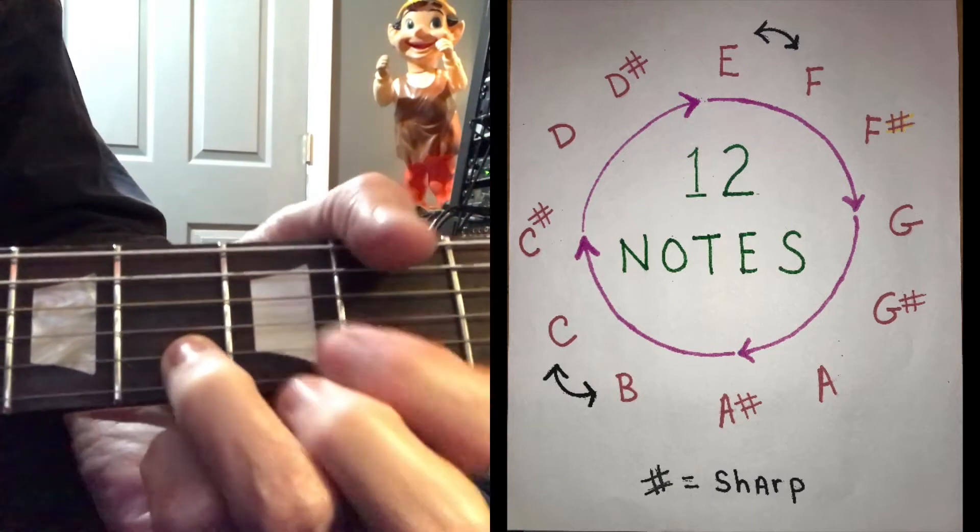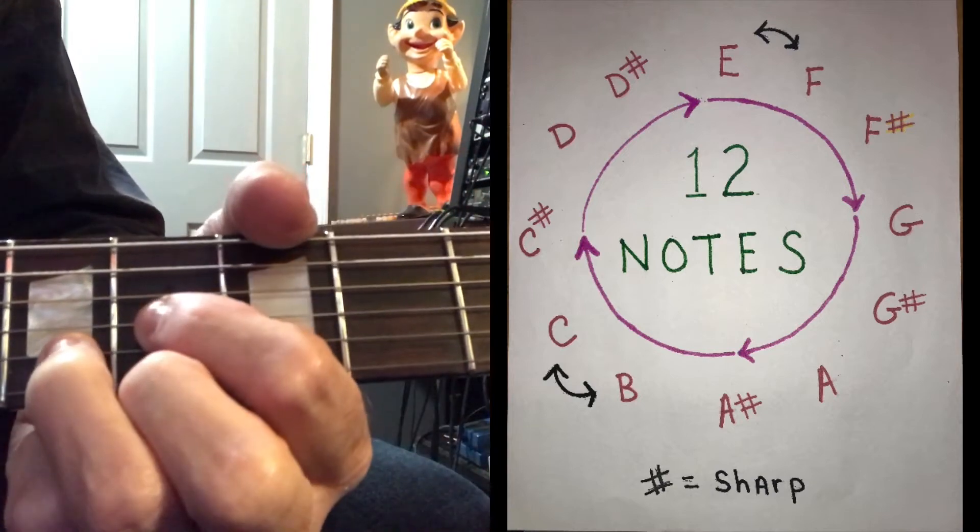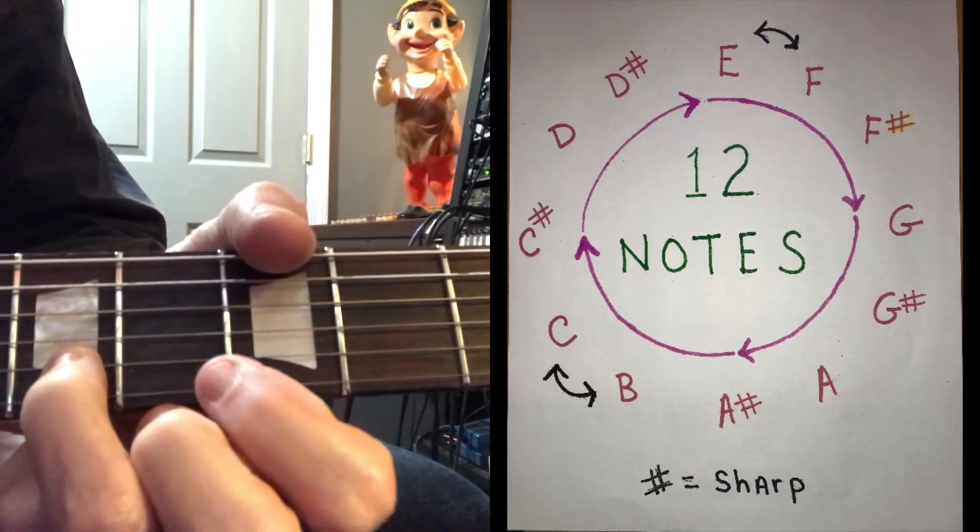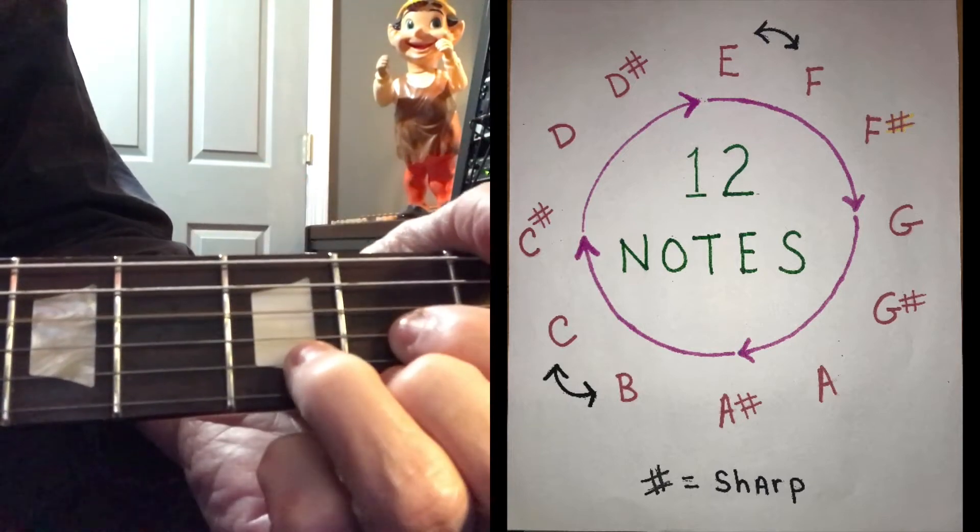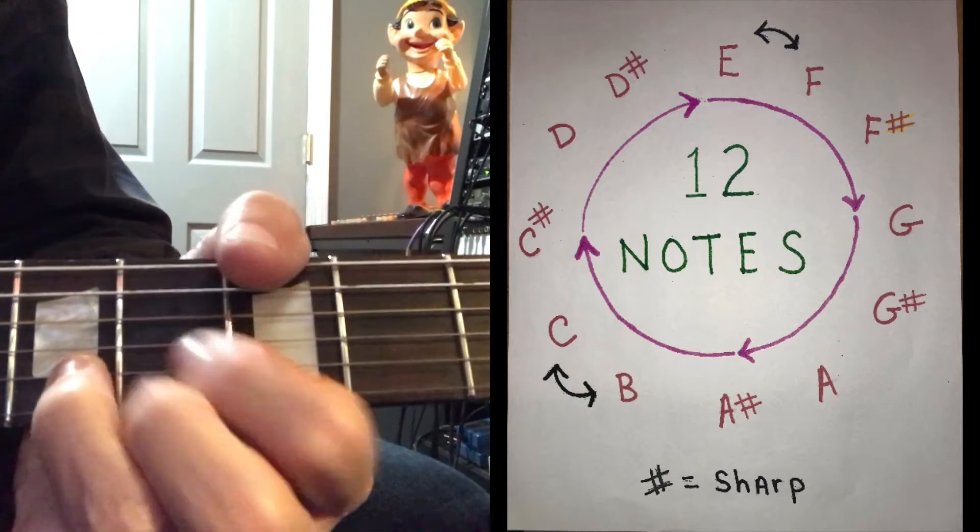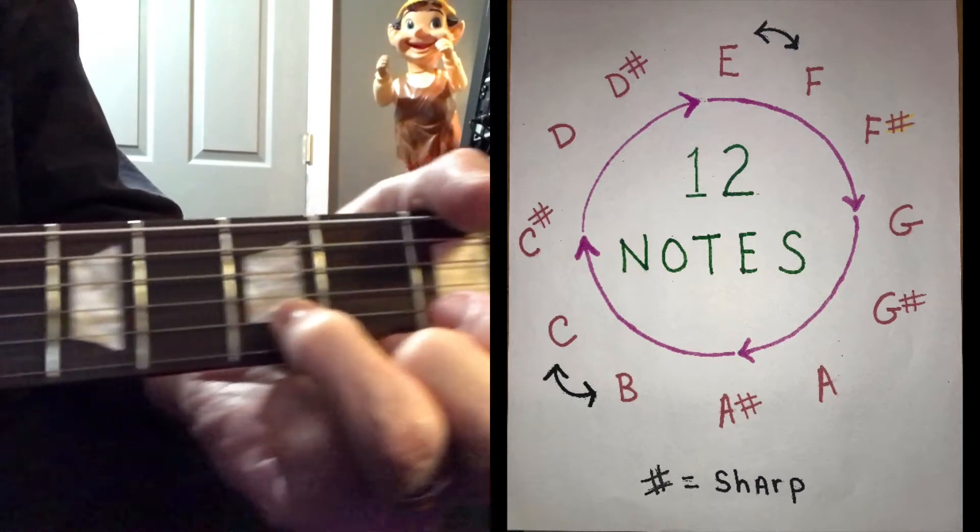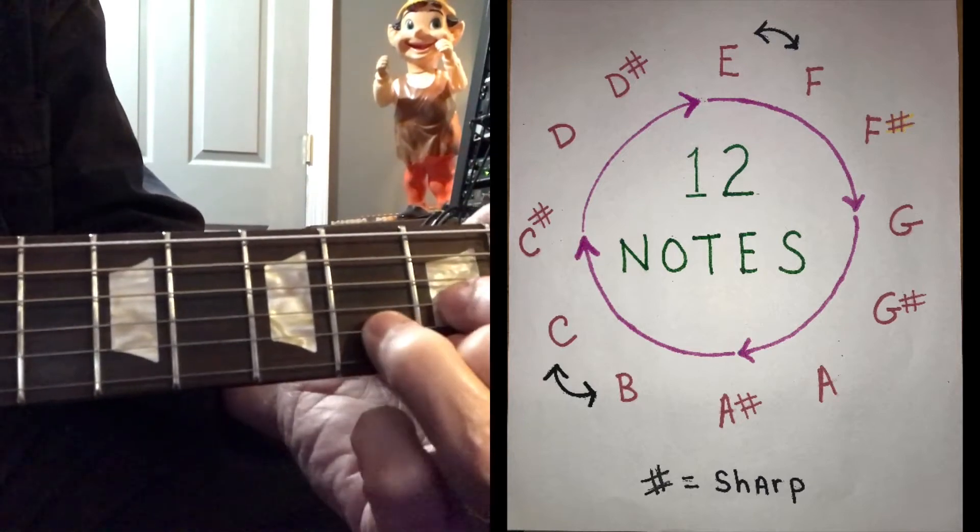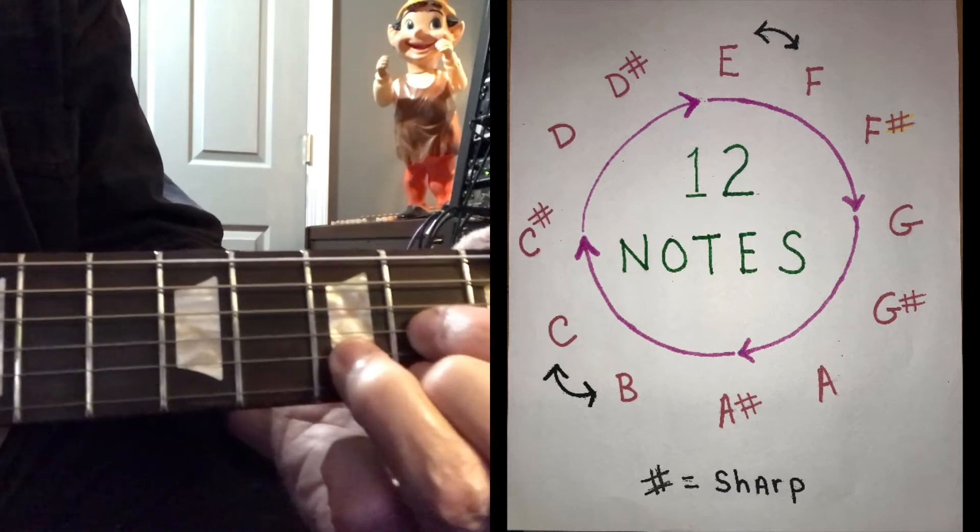If you move it up to here, that's a D sharp. And here, that's an E. So D, D sharp, E. And just keep going. As long as you keep going up, it's the same thing. This would be an F, F sharp.